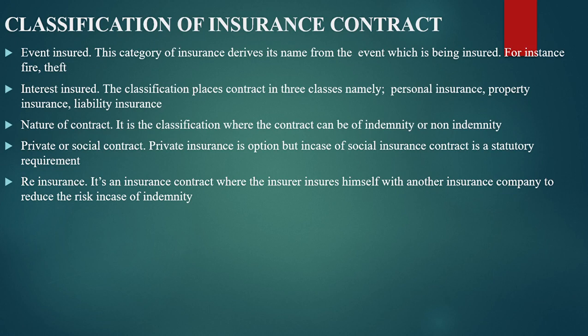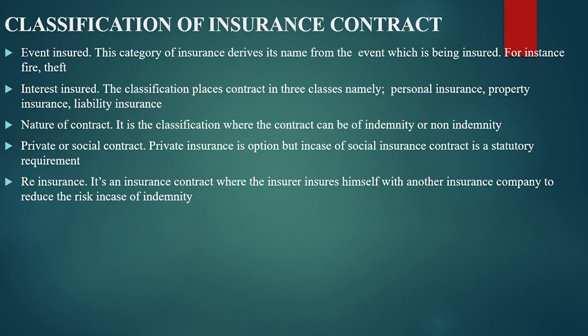There is also the classification of private or social insurance. Private insurance is optional, but social insurance is a statutory requirement. A good example of social insurance is motor vehicle third-party insurance, while examples of private insurance include NHIF and NSSF in Kenya. There is also reinsurance: this is where an insurance company insures itself with another insurance company to reduce the risk in case of indemnity, so that if a risk occurs exceeding their capacity, it is shared.